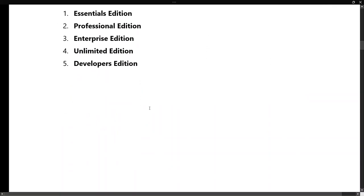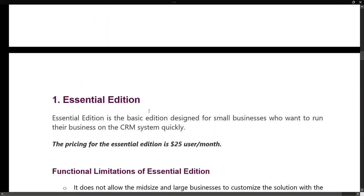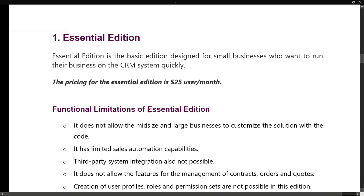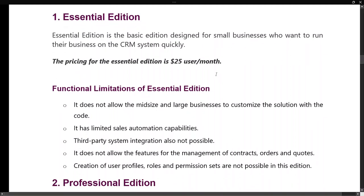The first is Essential Edition — it is the basic edition designed for small businesses that want to run their business on a CRM system quickly. This edition is for small businesses that don't require much functionality or features. The price for this edition is $25 per user per month, but it has its limitations — it does not allow mid-size or large businesses to customize the solution with code.